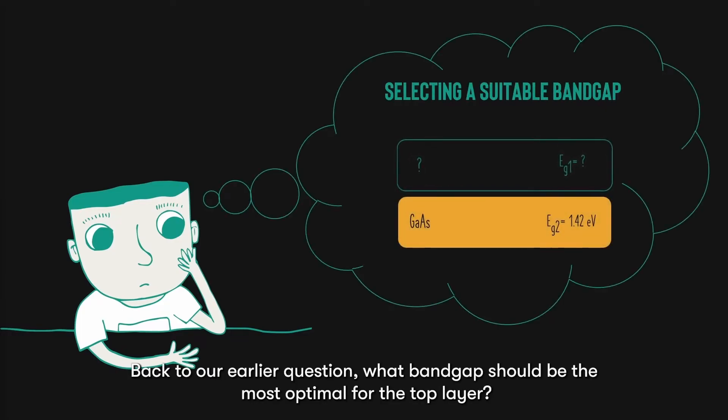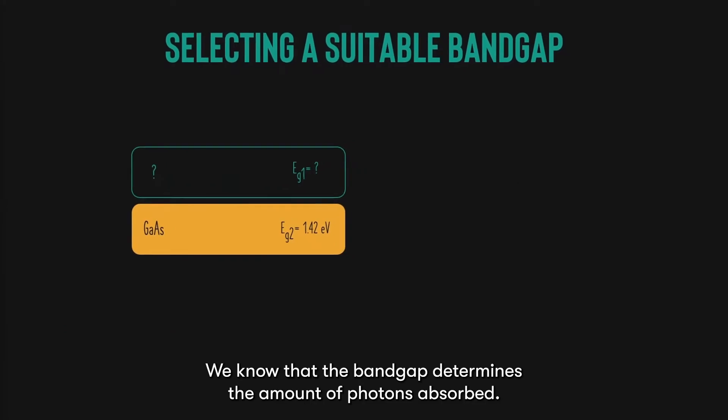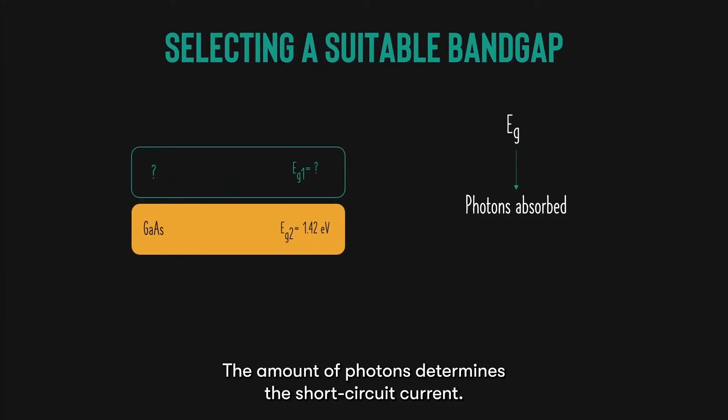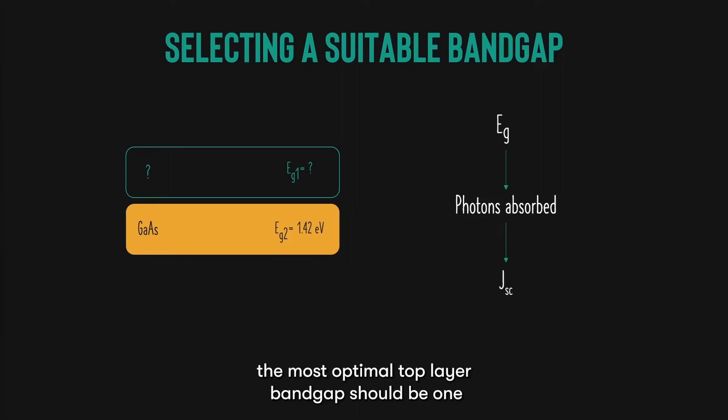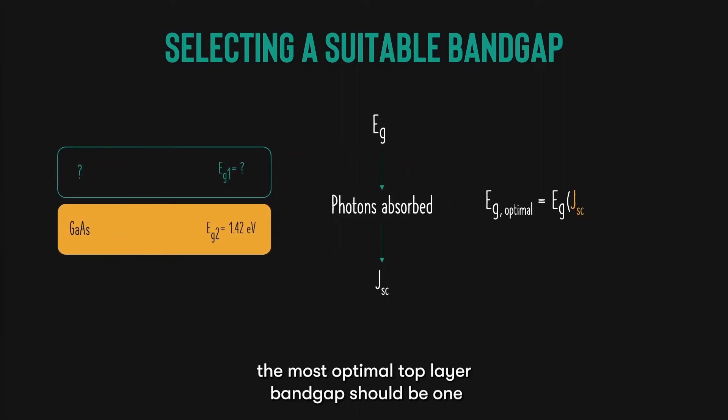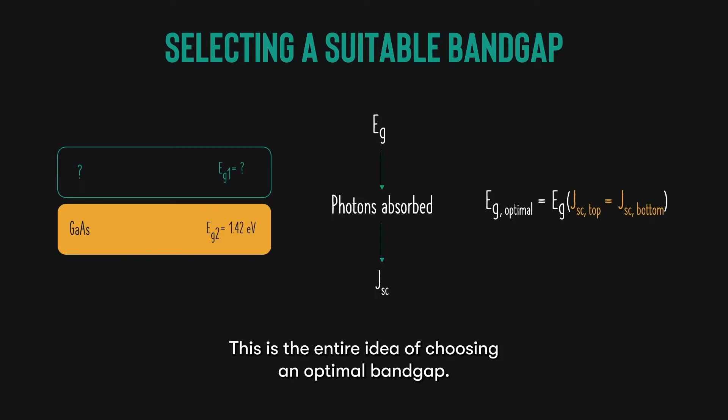Back to our earlier question, what bandgap should be the most optimal for the top layer? We know that the bandgap determines the amount of photons absorbed. The amount of photons determines the short circuit current. So, if we were to do current matching, the most optimal top layer bandgap should be the one that gives the same short circuit current as the bottom cell. This is the entire idea of choosing an optimal bandgap.